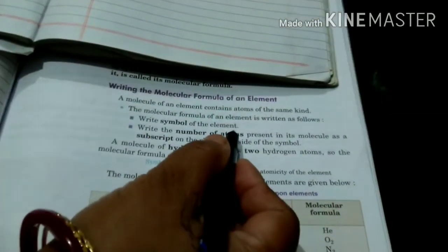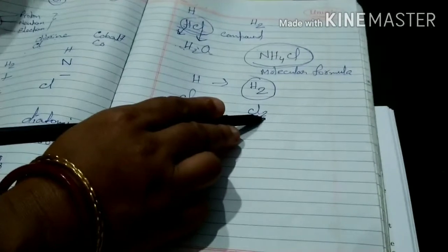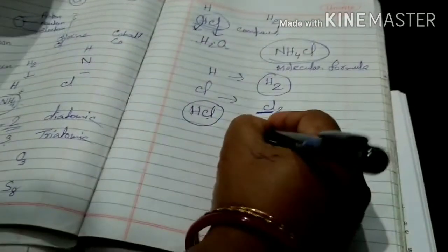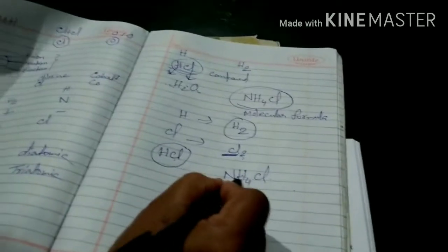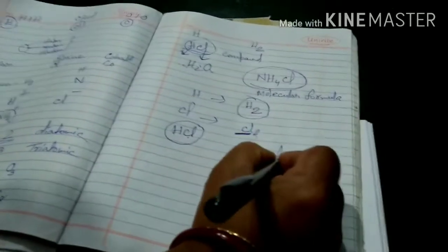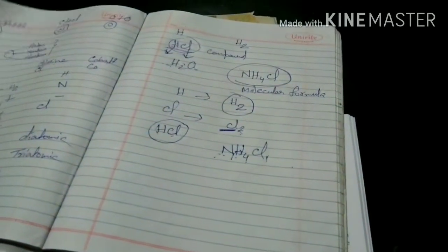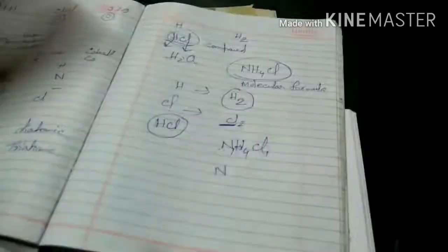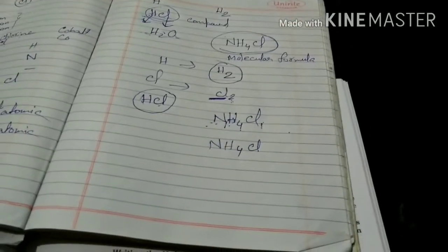How to write the molecular formula: write the symbol of the element, write the number of atoms present in the molecule as a subscript — that means at the bottom right side of the symbol. For ammonium chloride — nitrogen is there, hydrogen is there, chlorine is there. One nitrogen atom, four hydrogen atoms, one chlorine atom. If only one atom is there, we do not write 1 in subscript — we write N directly. Hydrogen has four, so we write 4. This is how we write the molecular formula.